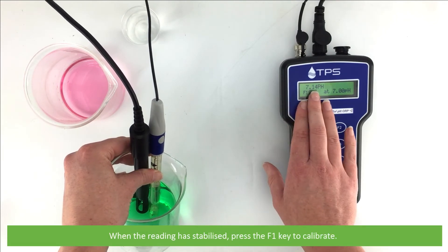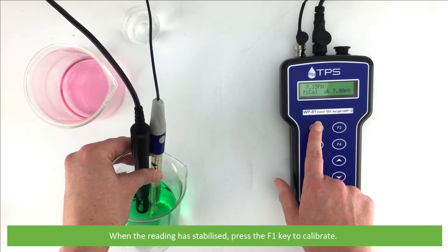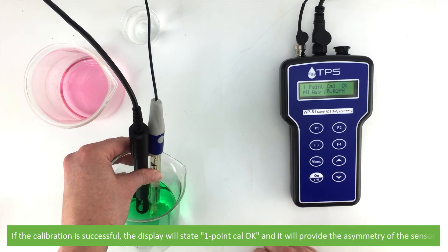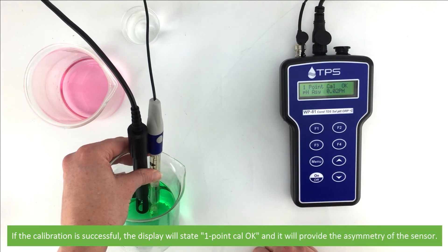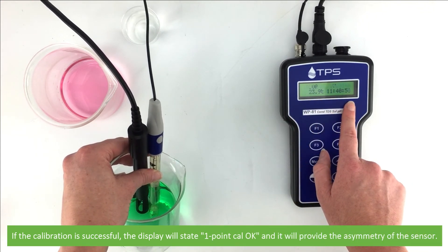When the reading has stabilized, press the F1 key to calibrate. If the calibration is successful, the display will state 1.Cal OK and it will provide the asymmetry of the sensor.